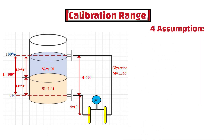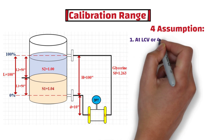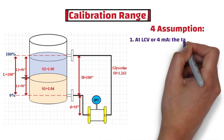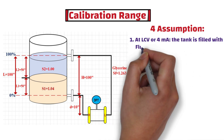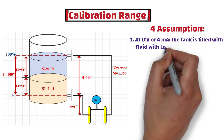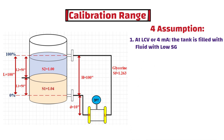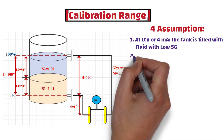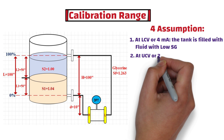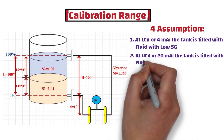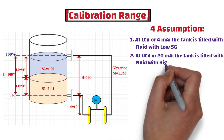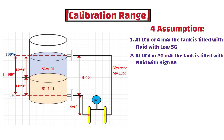Firstly, let's assume that at the lower calibrated value, or at the 4 mA point, the tank is filled with fluid which has low specific gravity. Secondly, let's also assume that at the upper calibrated value, or at the 20 mA point, the tank is filled with fluid which has high specific gravity.